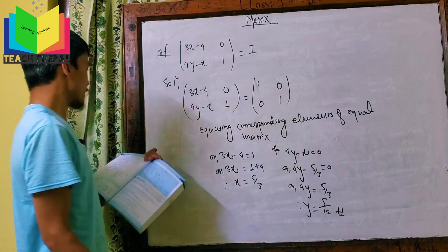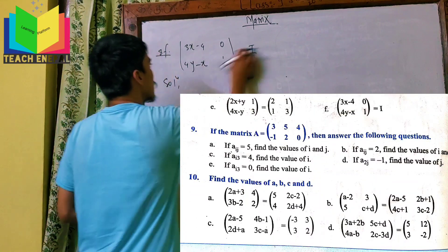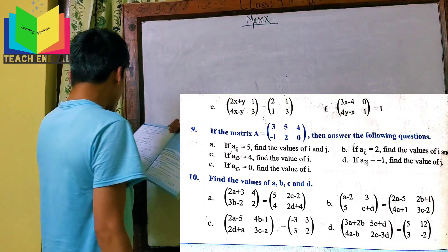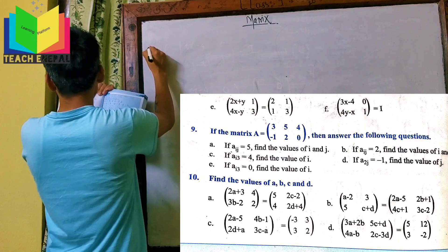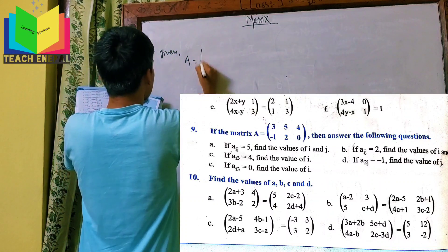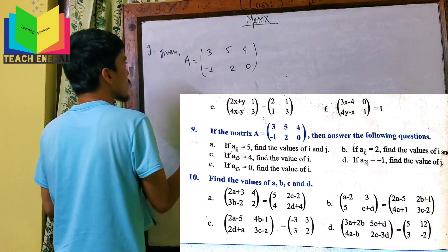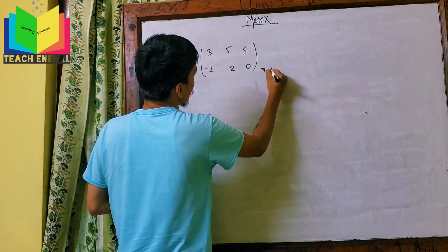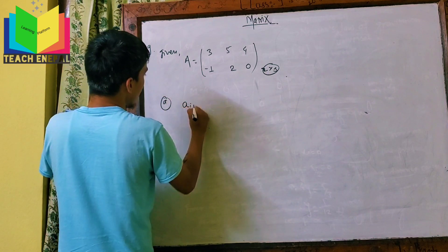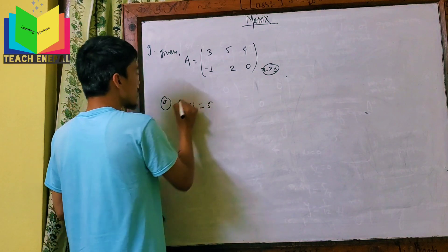Now let's go to question number 9. Here is question number 9. We have the matrix with elements 3, 5, 4 in the first row and -1, 2, 0 in the second row. This is a 2 rows, 3 columns matrix. If a-ij is equal to 5, then find the values of i and j. Here i and j are double suffix notation.